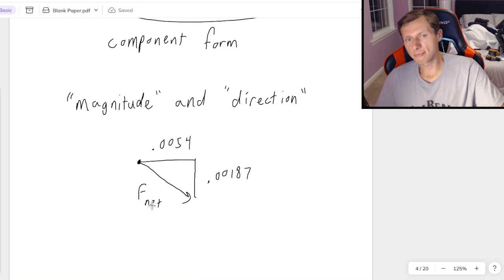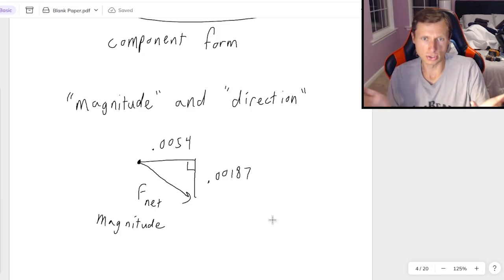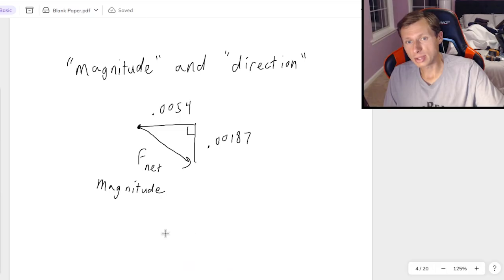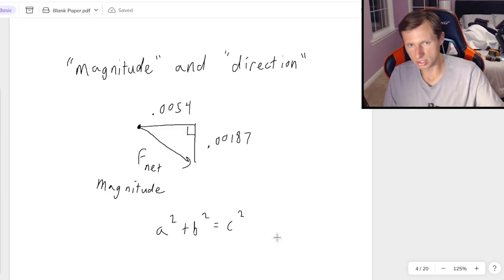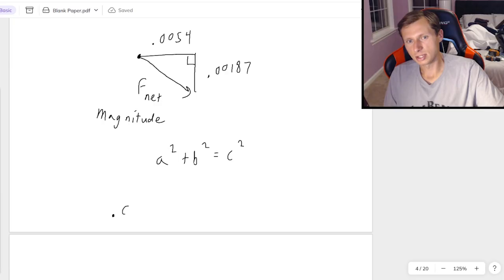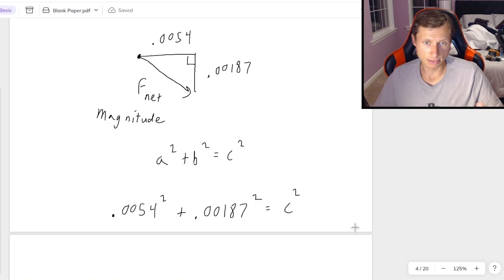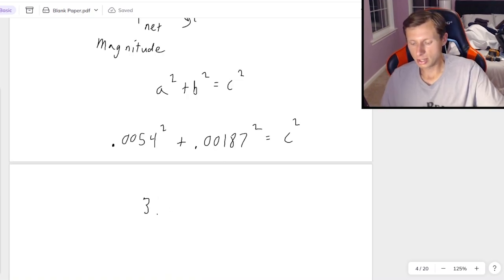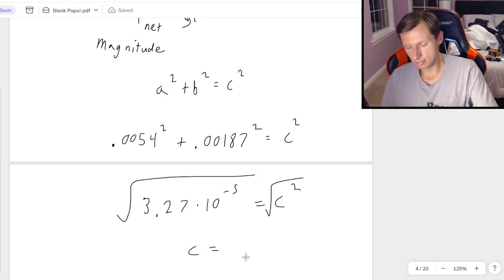And if you want to find the net force, in other words, the magnitude, and you remember this is a right triangle, then that means we're going to use Pythagorean theorem, a squared plus b squared equals c squared, to find the total magnitude of the net force. So that means it's going to be 0.0054 squared plus 0.00187 squared equals the hypotenuse squared, which will be our final answer. So the left side will be 3.27 times 10 to the minus fifth, which is a really small number. But then you just take the square root of that.